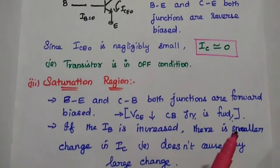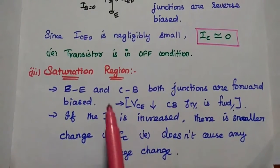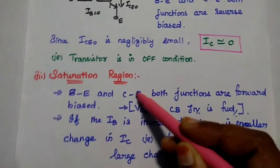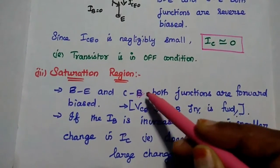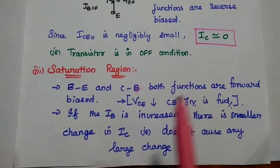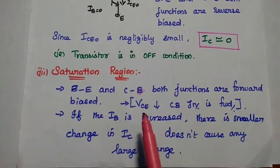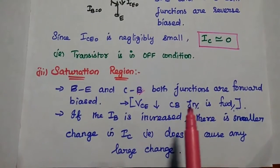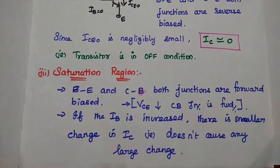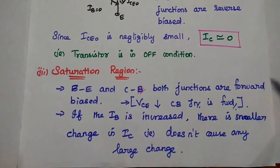The last region is saturation. In this region, both the base emitter and collector emitter junctions are forward biased. There is a small increment in VCE, and correspondingly, there is a large variation in current conduction.